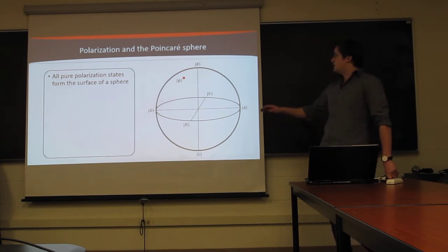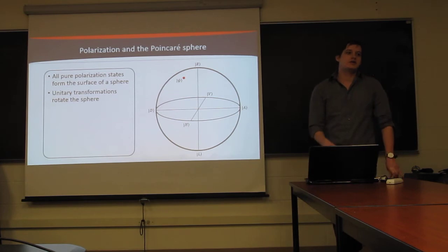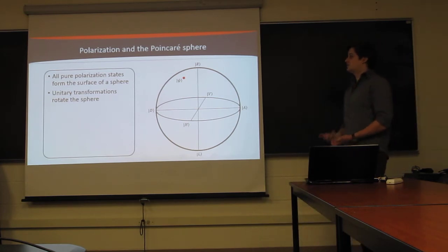Any linear combination of these states can again just be represented as a point. The reason that this picture is super useful is because any unitary transformation we make actually acts to just rotate points on the sphere.